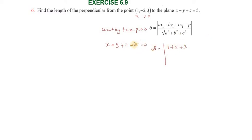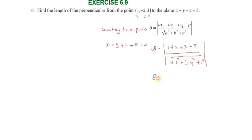Then minus 5, divided by the square root of a squared plus b squared plus c squared. The numerator gives 1 plus 2 plus 3 minus 5, which equals 1. The denominator is root of 1 plus 1 plus 1, which is root 3. So the length of the perpendicular is 1 by root 3 units.